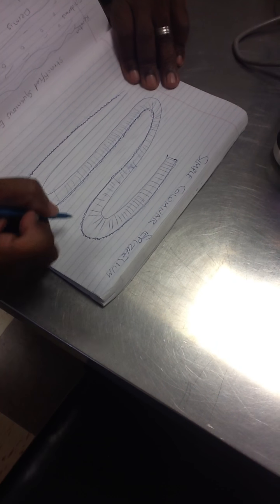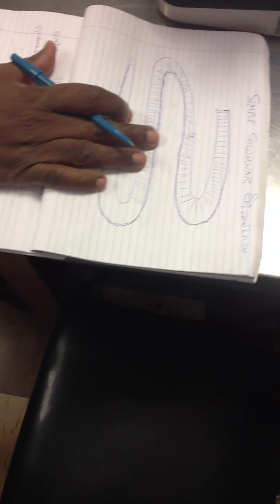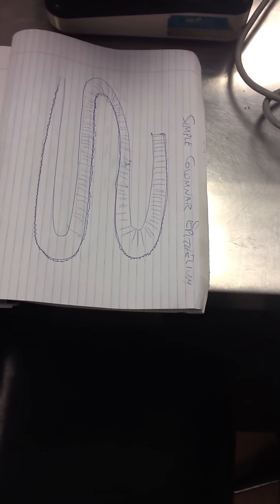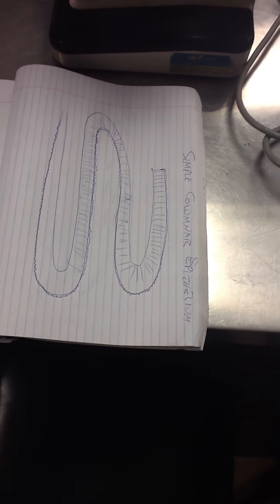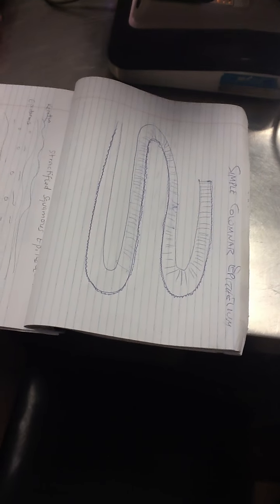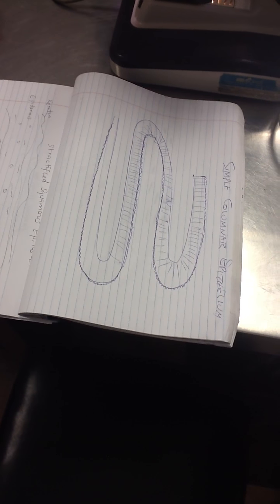Okay, class. What I have here is simple columnar epithelium of the GI tract. In the GI tract, the lining has folds called villi. On the folds, you have the epithelium, which is the simple columnar epithelium. On the surface of the epithelium, you have microvilli. Give me a definition of microvilli.